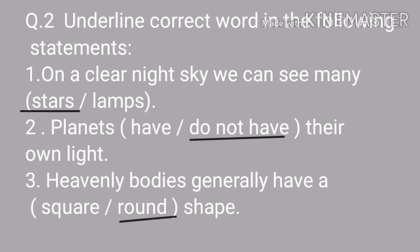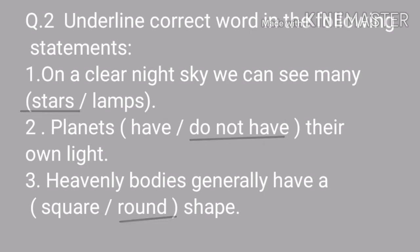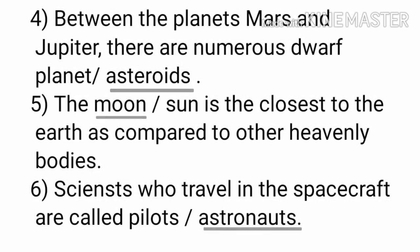Question Number 2 — Underline the correct words. First: On a clear night sky we can see many stars or lamps — answer is stars. Second: Planets have or do not have their own light — answer is do not have their own light. Third: Heavenly bodies generally have a square or round shape — answer is round shape.